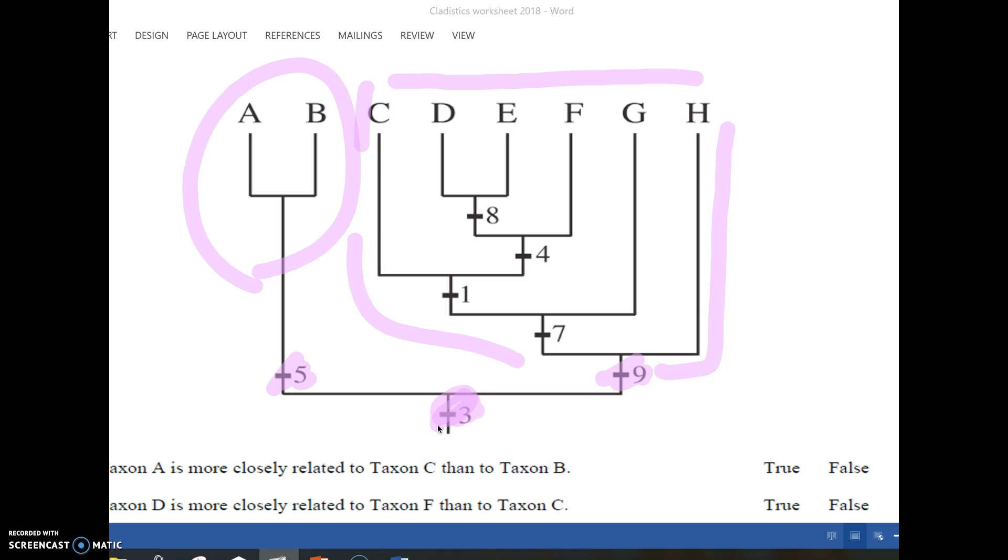Now remember, this does not tell us necessarily time. You can't assume that five and nine appeared at the same time. It's really important. Unless it's labeled time somewhere on your cladogram, you really don't know when the traits appear. You don't know what happened before something else. So nine and five did not necessarily appear at the same time. We do know seven obviously came after nine, and three had to come before nine, because those literally track back to one another.